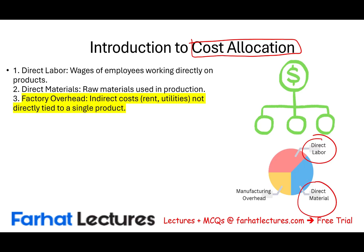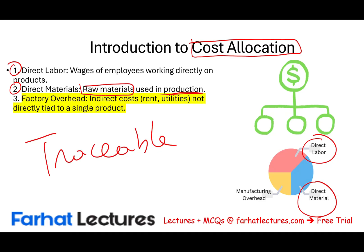What are direct materials? Direct materials are materials used in the production. Direct labor are wages of employees that work directly on the product — we call them touch labor. Direct labor and direct material are called direct for a reason: they are traceable. We can know exactly how much direct labor and direct material we incurred. For example, if we are manufacturing a bicycle, we know how many hours an employee worked on that bicycle, and we know the cost of the wheels and the cost of the brakes, because we can trace the direct material directly.